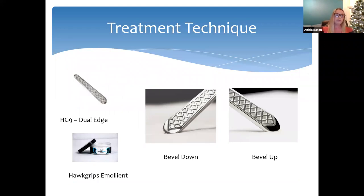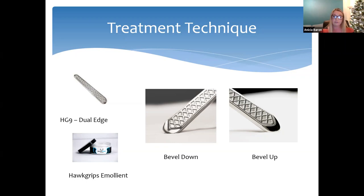From week twelve post-op the patient attended weekly appointments for Hawk Grips application, scar management, passive stretches, and splint progression. The tool used was the HG9, also known as the dual edge or tongue depressor, chosen for precision work on the small joints of the finger. An angle of approximately 45 degrees with a brushing technique was maintained throughout. As the patient was slightly hypersensitive along the scar, treatment initially started bevel down — the softer edge — to aid desensitisation, before switching to bevel up to dive into soft tissues and target specific areas including the volar plate and collateral ligaments.